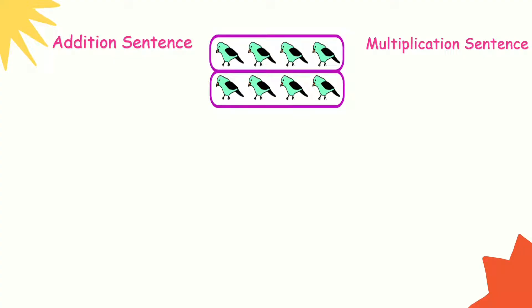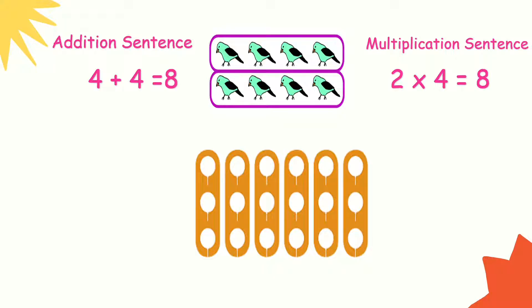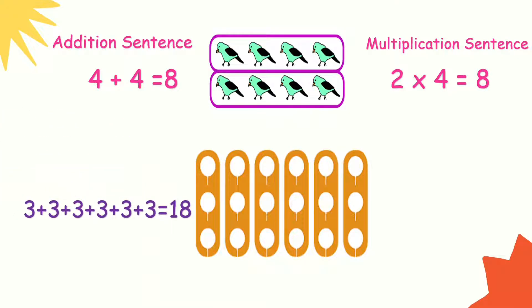Let's look at the birds again, but this time arranged in an array. There are 8 in all, so 4 plus 4 equals 8, and the multiplication sentence is 2 times 4 equals 8. For the next one, there are 6 groups with 3 in each — so 3 plus 3 plus 3 plus 3 plus 3 plus 3 equals 18. Multiplication: 6 times 3 equals 18.